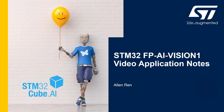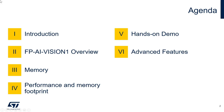Hello and welcome to this series of STM32 FP AI Vision 1 video application notes. I'm Alan Ren, and I will guide you through this series of videos. In this series, we will start with a brief introduction, followed by an overview of the FP AI Vision 1 function pack, a look at memory requirements and placement, performance and memory footprint, a demo of how to run a foot recognition application using the QSPI external flash on the STM32 H747i discovery board, and finally some advanced features of embedded validation and testing.